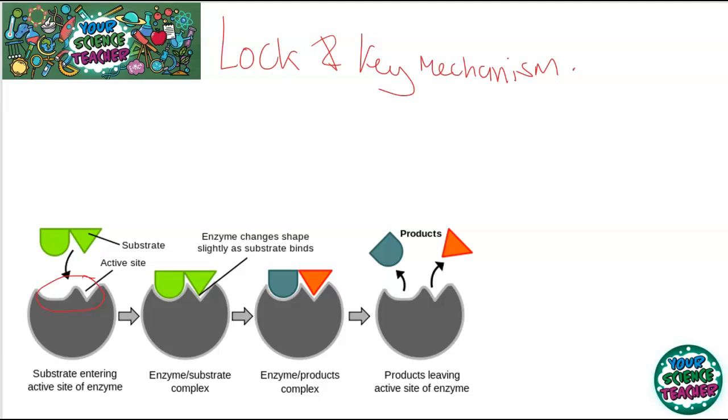And when the substrate leaves, it will leave as two separate products and it will therefore be smaller and therefore be easier to be digested. Now, because these enzymes speed up the digestion, they are known as biological catalysts. And that is the definition of an enzyme - they are biological catalysts. And also that term catalyst is important because catalyst means that you're not changed. They're not changed. They can be used again and again.